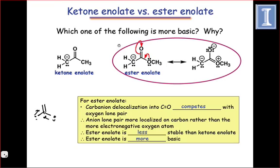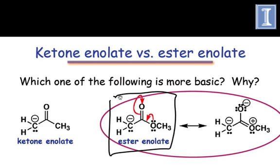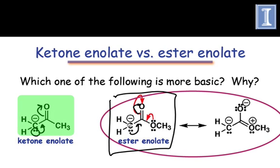Both experience delocalization of the lone pair into the pi-star of the carbonyl group. However, the ketone's lone pair can more effectively delocalize, because the ester's lone pair on carbon is competing for delocalization with the oxygen atom, which is also able to delocalize into the carbonyl's pi-star orbital. The carbon lone pair of the ester enolate is thus less delocalized, more basic, more reactive, and more unstable than the lone pair of the ketone enolate.